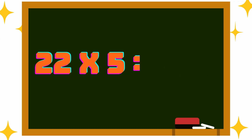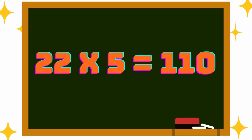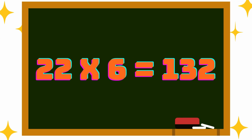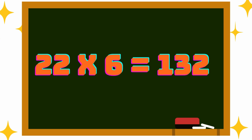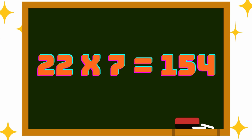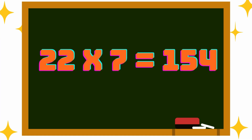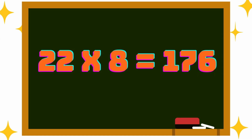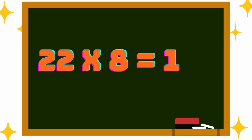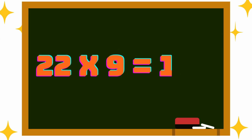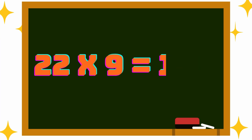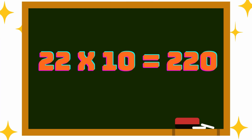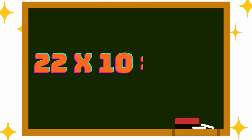22 into 6 is 132, 22 into 7 is 154, 22 into 8 is 176, 22 into 9 is 198, 22 into 10 is 220.